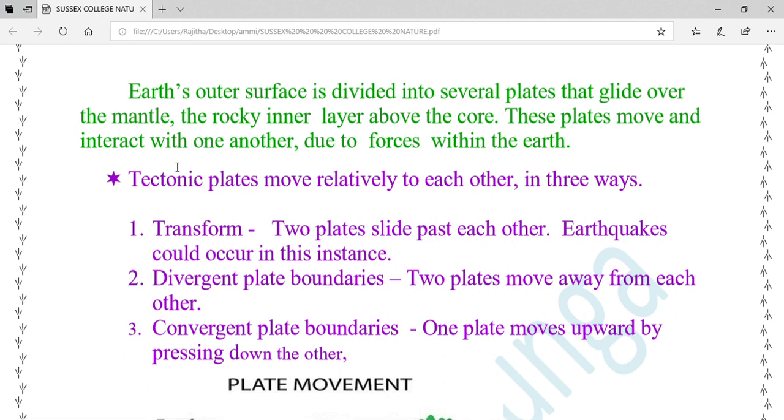Tectonic plates move relative to each other in three ways: Number one, transform - two plates slide past each other, earthquakes could occur in this instance. Number two, divergent plate boundaries - two plates move away from each other. Number three, convergent plate boundaries - one plate moves upward by pressing down the other.